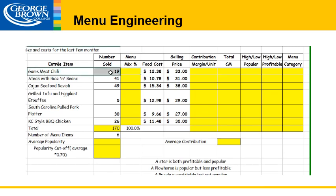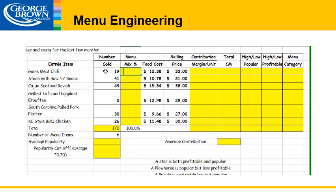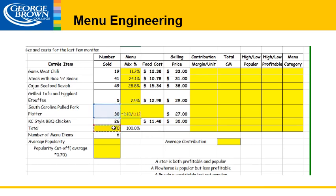We want to calculate each item's menu mix percentage — the percentage of total entrees sold that we can account for each item. So if we take our number of game meat chilies sold and divide it by the total, 11.2% of all menu items sold were game meat chilies. We do that for every item: steak with rice and beans had a 24.1% menu mix percentage, Cajun seafood ravioli had a 28.8% menu mix percentage, and grilled tofu and eggplant etouffee had a 2.9% sales mix percentage — not very high compared to others.